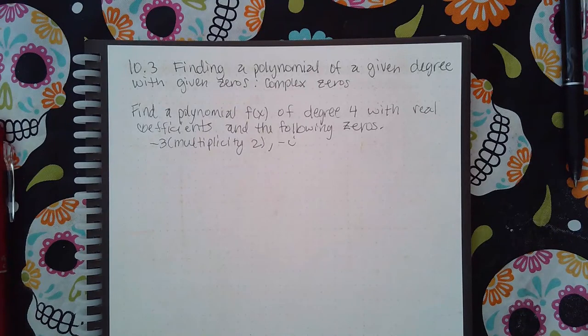Here we have 10.3, finding a polynomial of a given degree with given zeros, complex zeros. Find a polynomial f(x) of degree 4 with real coefficients and the following zeros: negative 3 with multiplicity 2 and negative i.